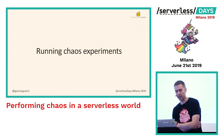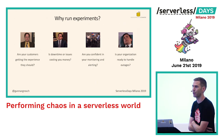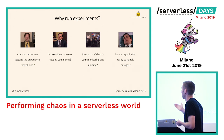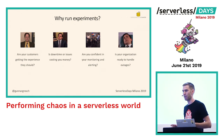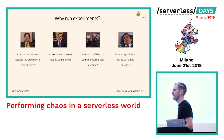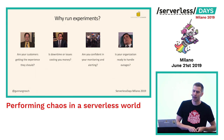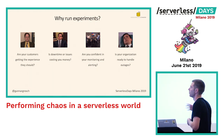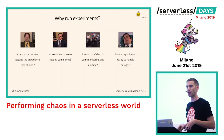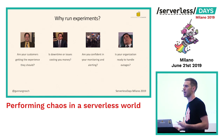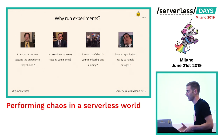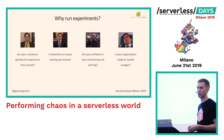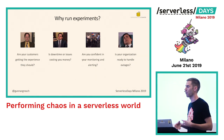So, running chaos experiments — first off, why? Why do we run chaos experiments? Well, are your customers getting the experience they should, or is the system behaving in a way that customers don't like? Is downtime costing you money? Are you confident in your monitoring and alerting, so that if an issue occurs, your ops team will get alerts and act on them accordingly? And last, is the organization ready to handle outages? Is your development team, your DevOps team, your operations team, ready to handle a big outage?